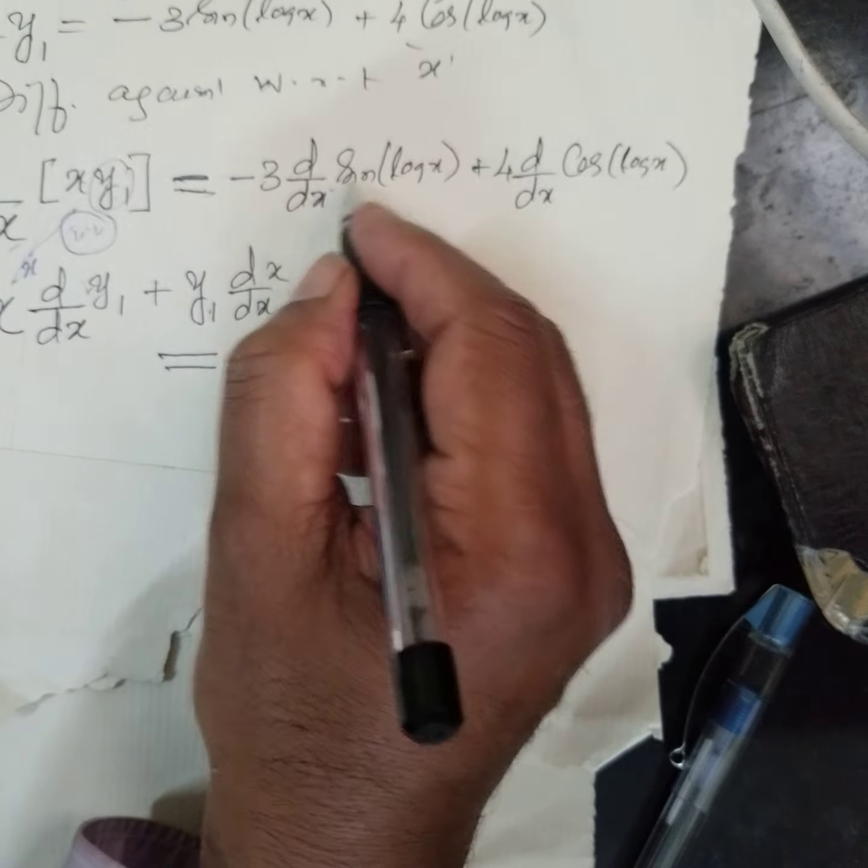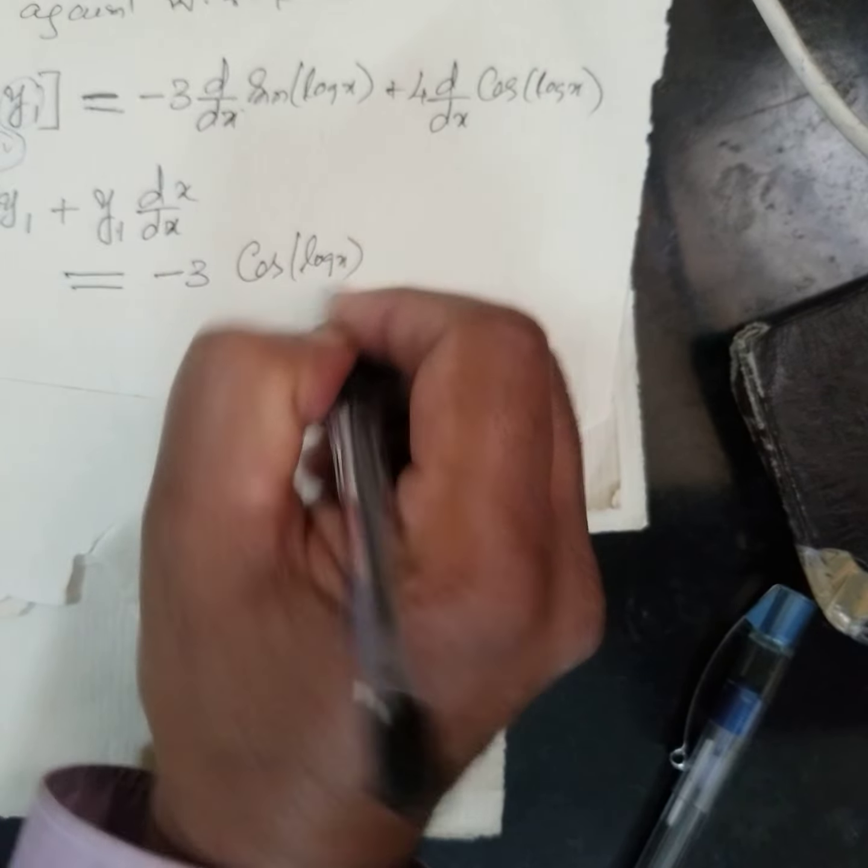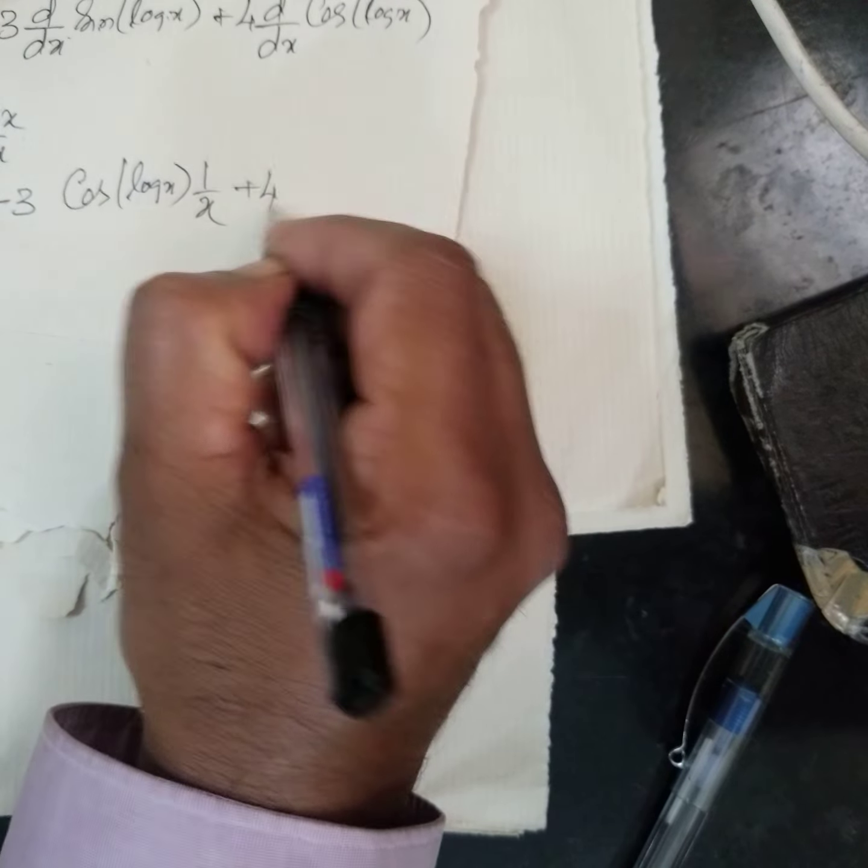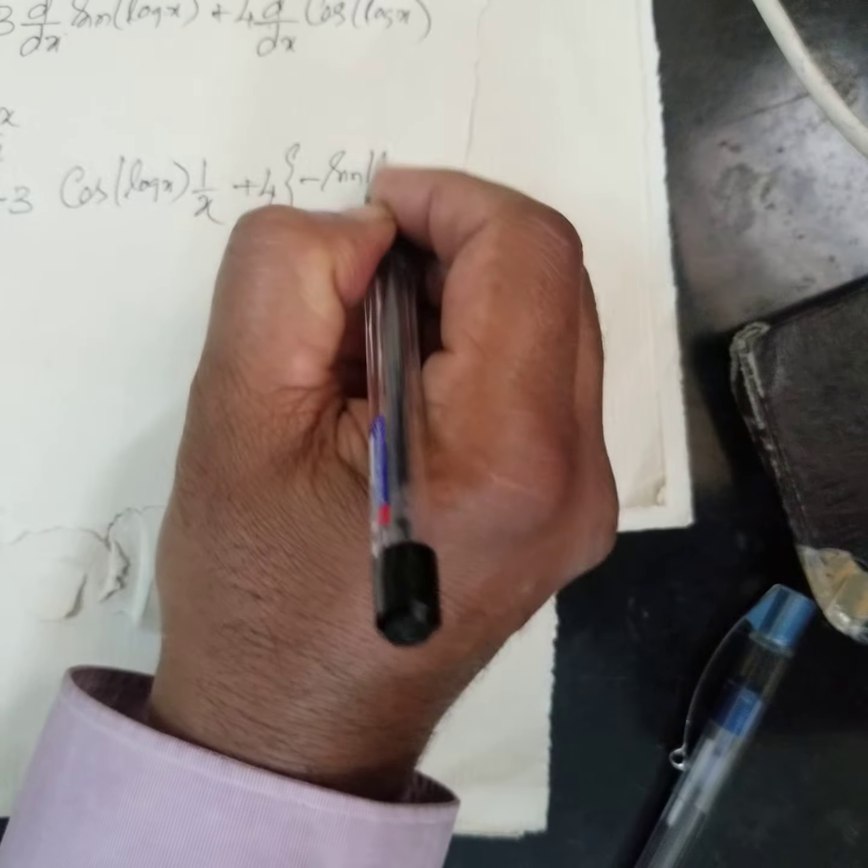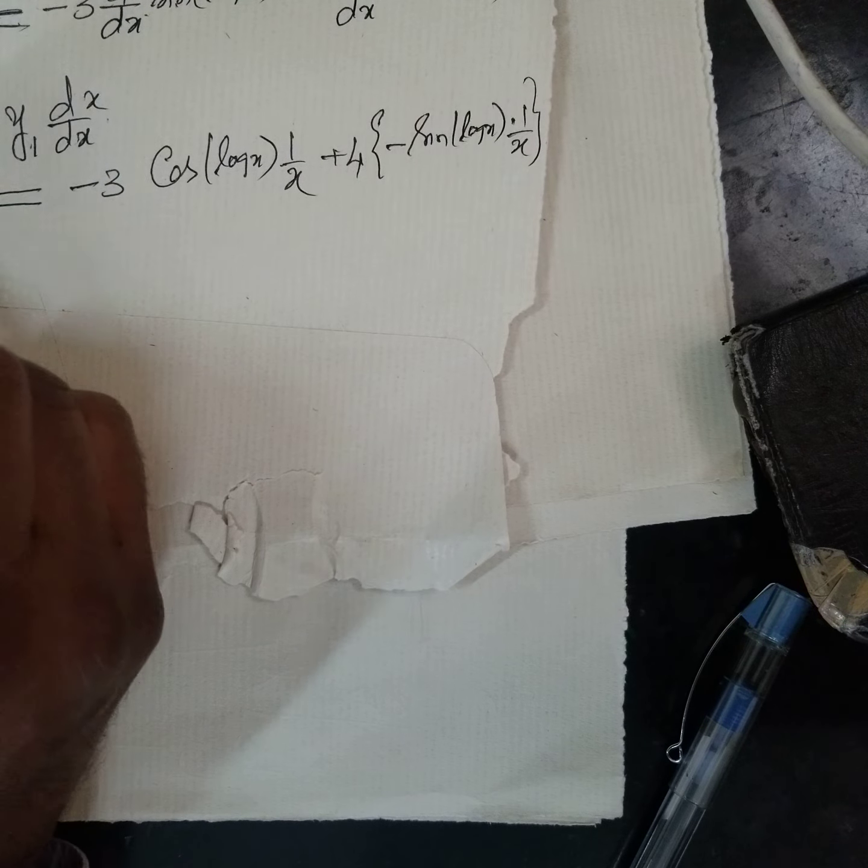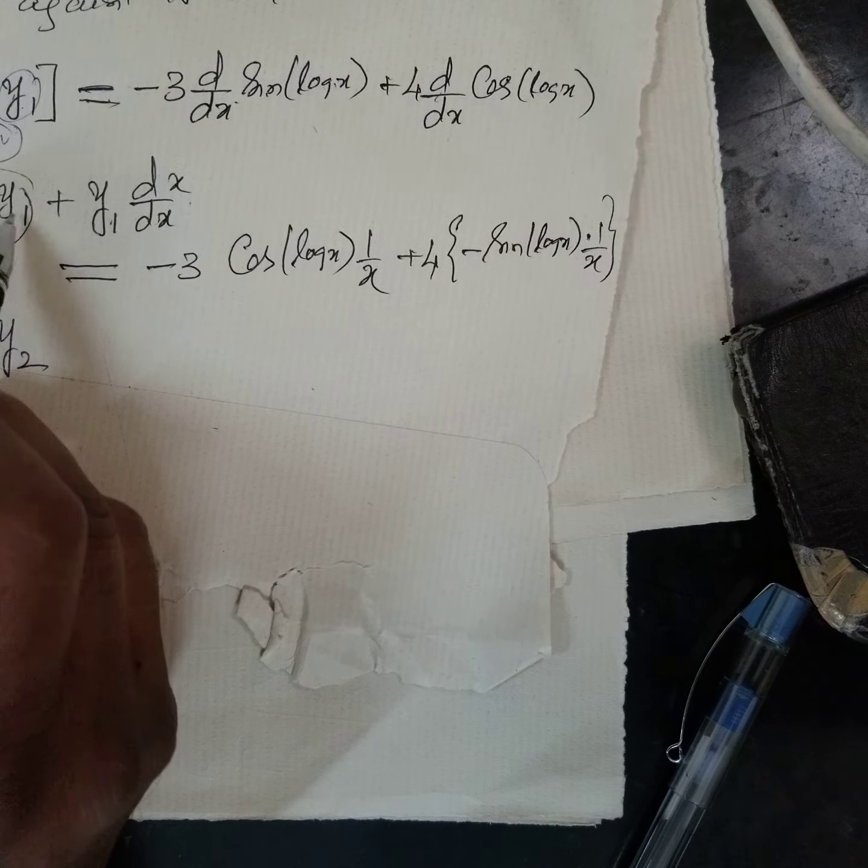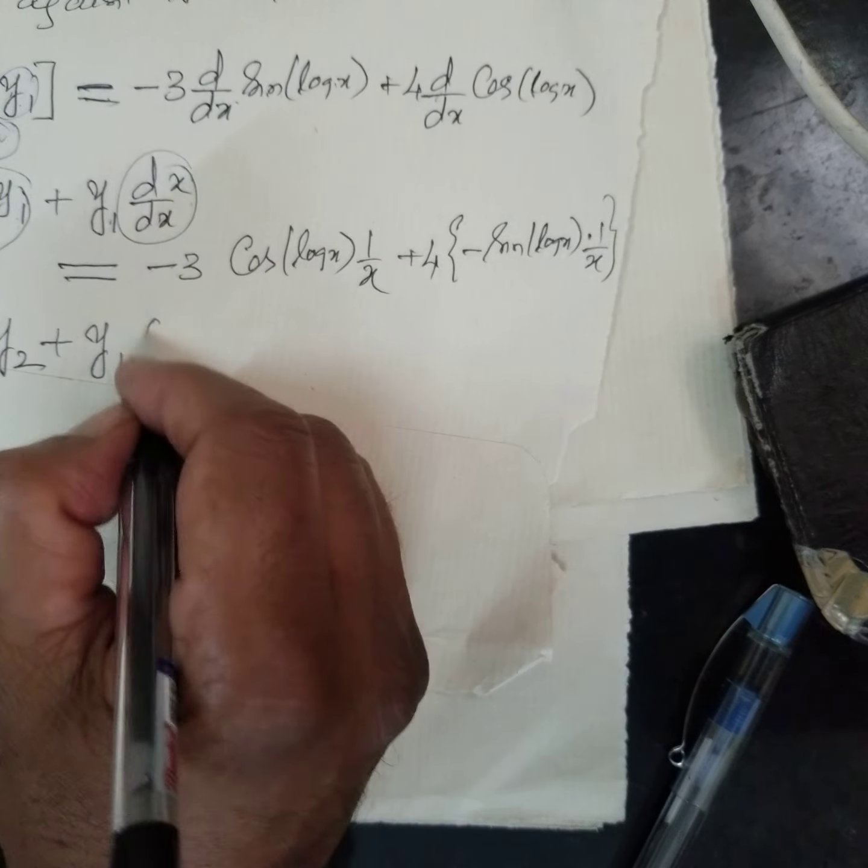Is equal to, here minus 3, differential coefficient of sin is what? Cos log x. Again, into differential coefficient of log x is what? 1 by x. Similarly, 4, differential coefficient of cos is what? Minus sin log x, into differential coefficient of log x. Therefore, x. See, what is this? This is called y2.